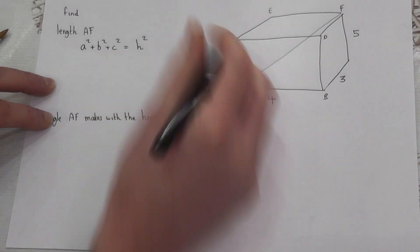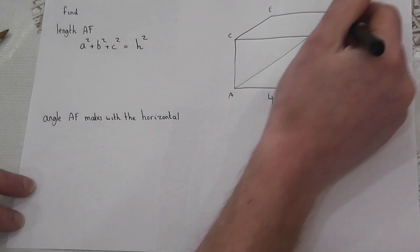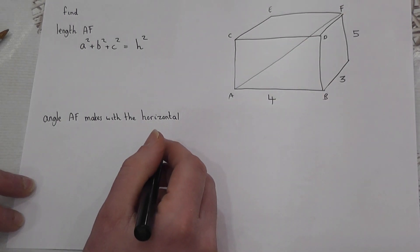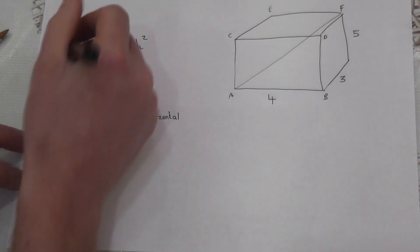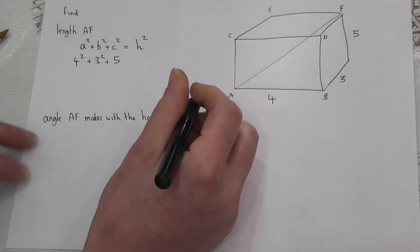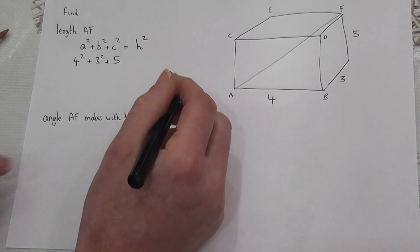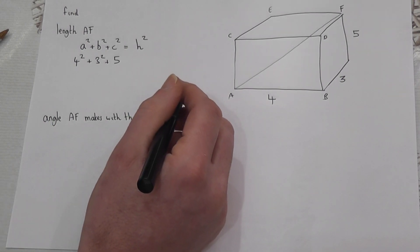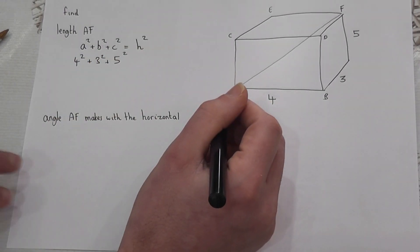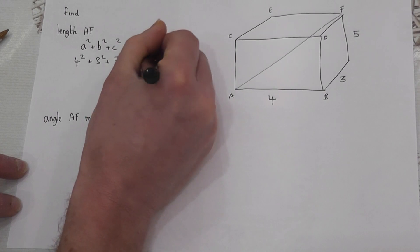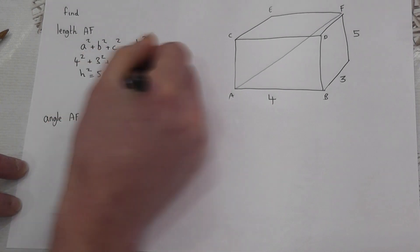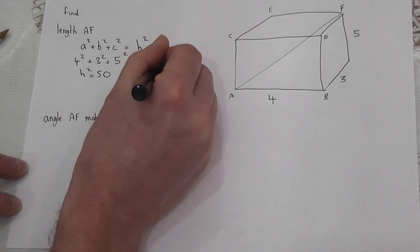To find this, I just do 4² + 3² + 5². So 16 + 9 + 25, and that equals 50. So h² equals 50, so h equals the square root of 50.